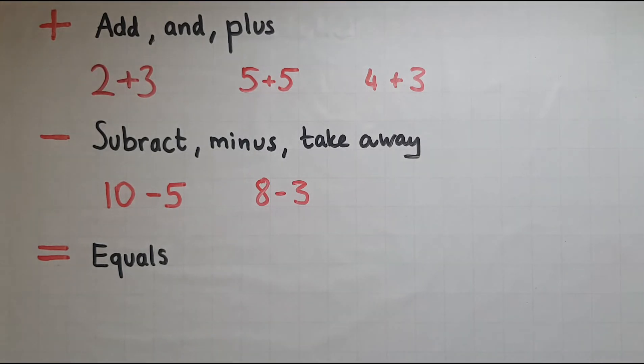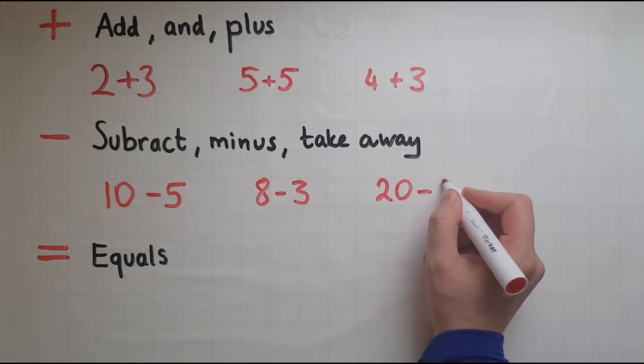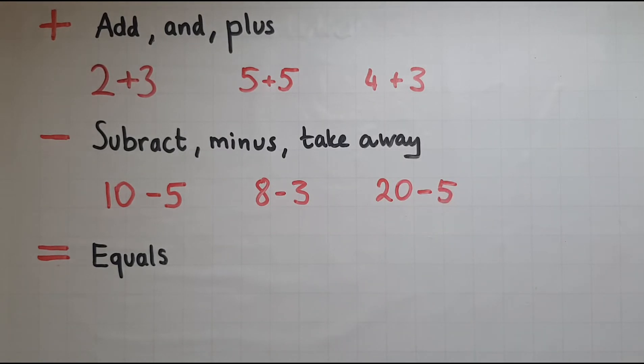So that would be, let's say 20, take away 5. What does it give me? What's the answer?